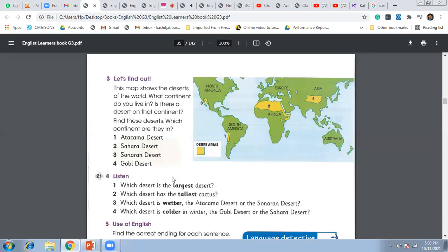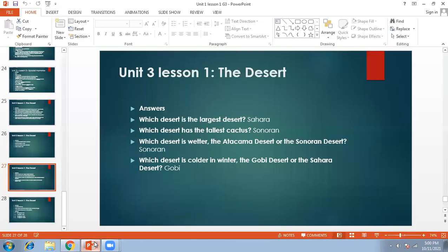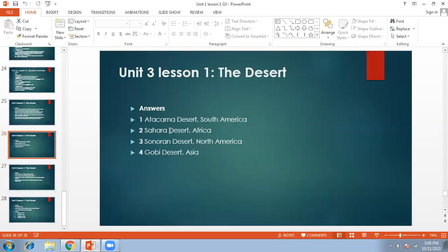All right, so in this track we came to know about the weather conditions within these four deserts: Atacama, Sahara, Sonoran, and Gobi Desert. Let me show you through this presentation. This is the answer to question number three. Atacama Desert is in South America, Sahara is in Africa, Sonoran Desert is in North America, and the Gobi Desert is in Asia.